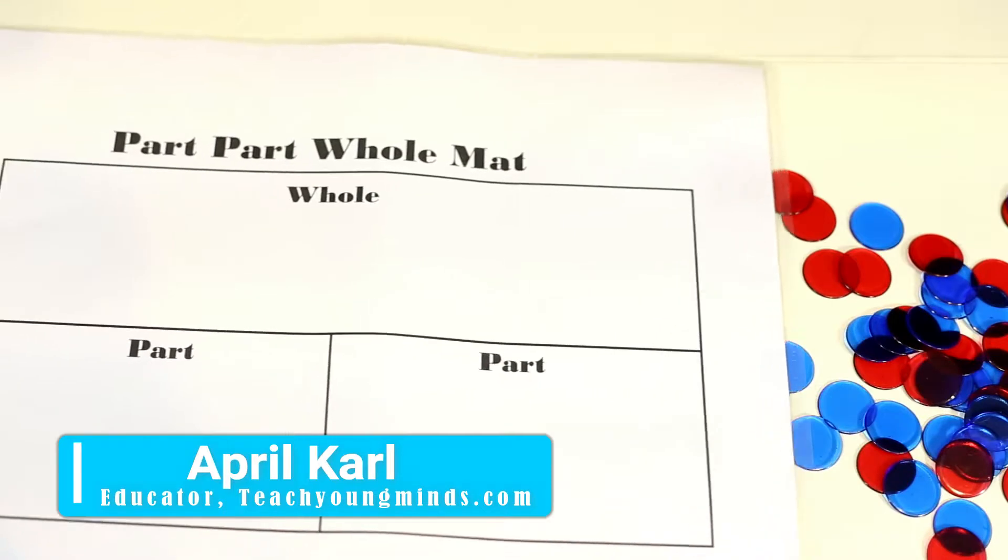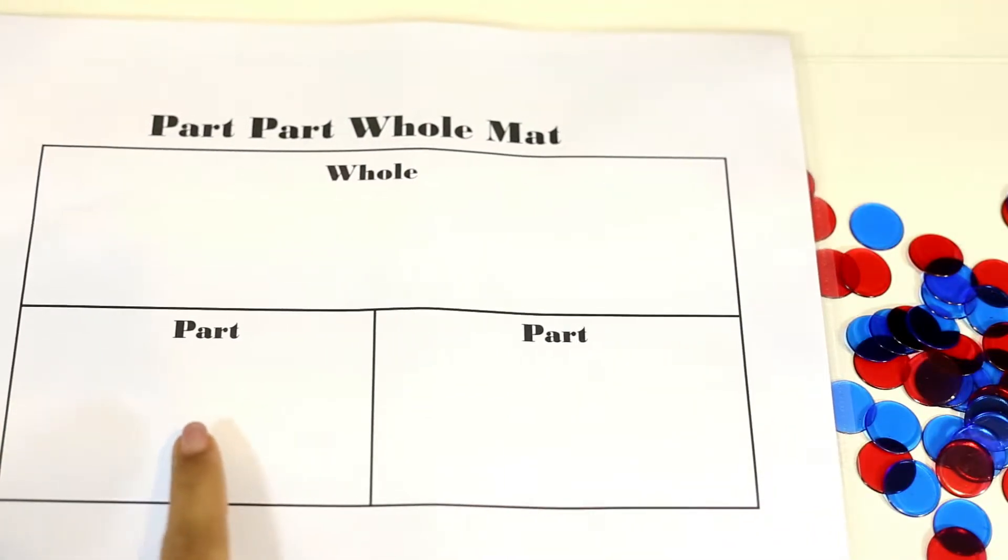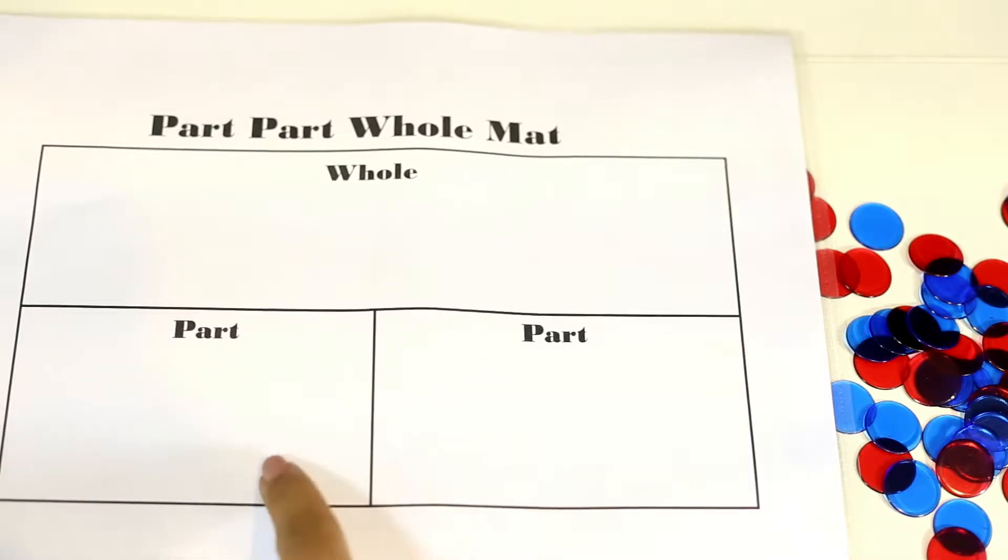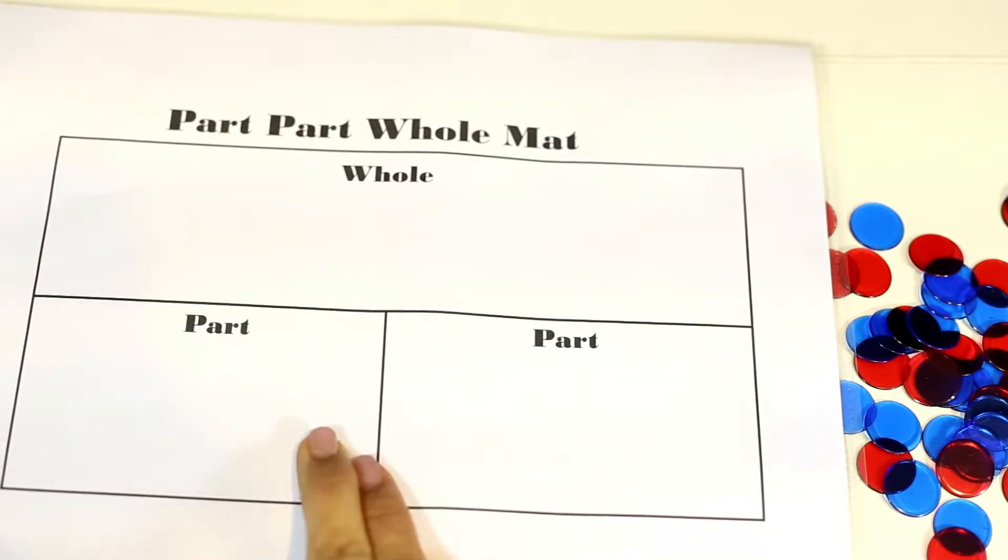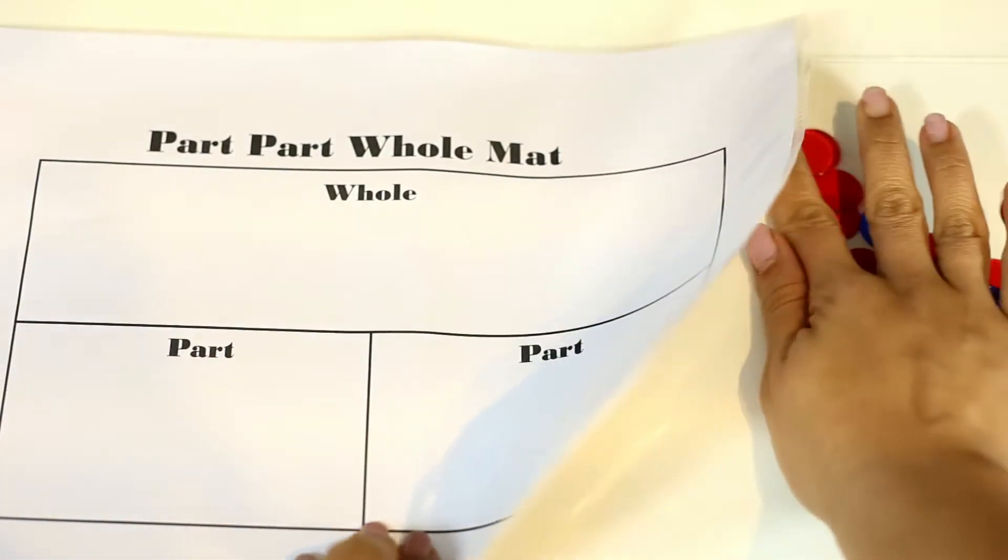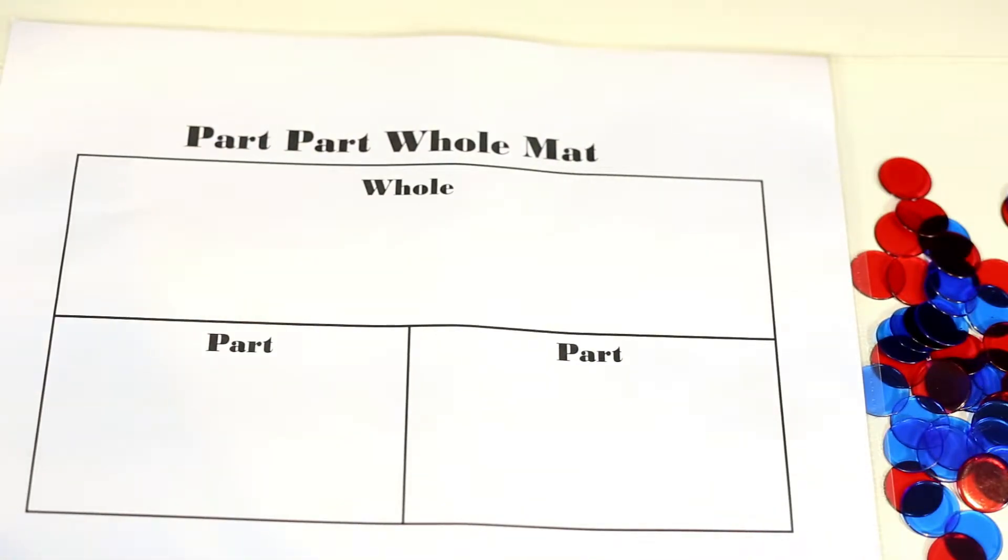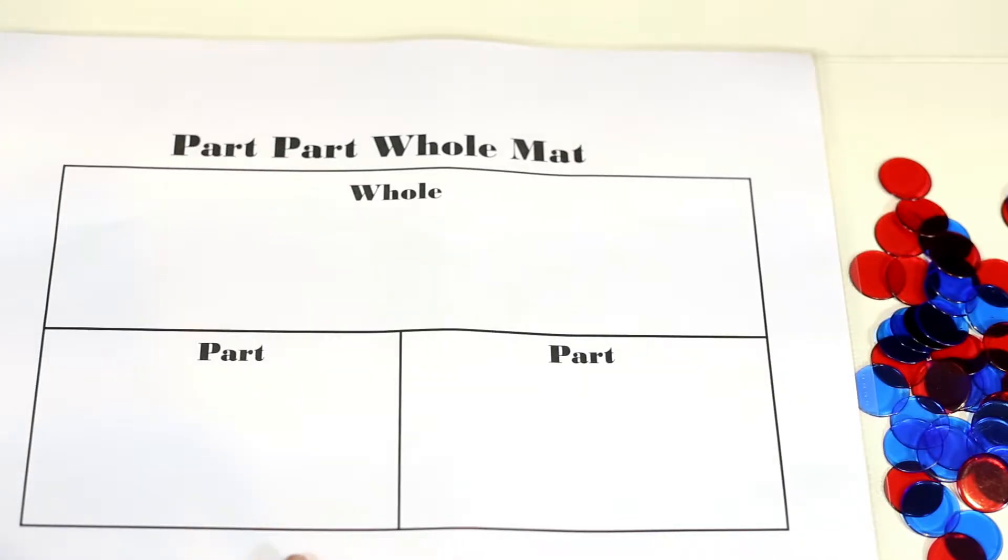Okay friends, so this is a part-part-whole mat. There are basically two boxes, two smaller boxes that make up the parts, and when you put them together it creates the whole. So we're going to first take a look at addition and how learners can use the part-part-whole strategy in the mat to solve addition problems.